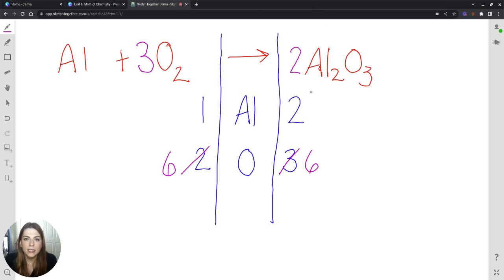Additionally, I can take these aluminums, the two and the two, that gives me four. And then that tells me that I can just pop a four out in front of the aluminum here, giving me four on the reactant side.